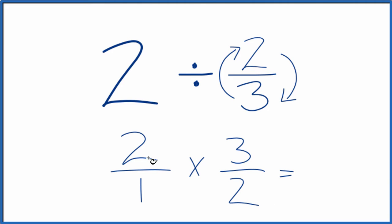Now we just multiply. Two times three is six. One times two, that's two. And two goes into six three times, so three.